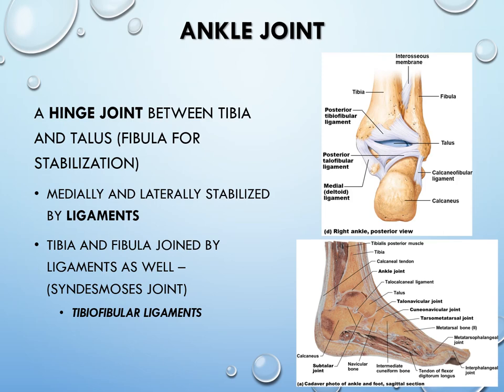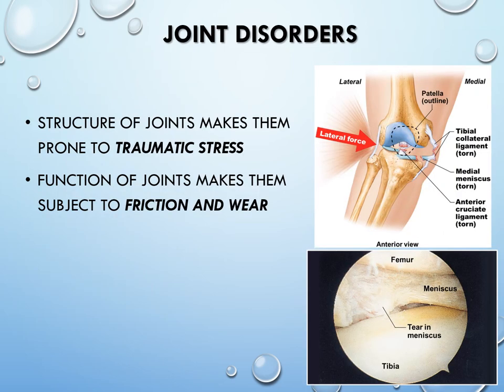The ankle is also a good hinge joint. The fibula provides lateral stabilization. Medial and lateral ligaments help stabilize side-to-side movements. The tibiofibular ligament — a syndesmosis joint — holds the tibia and fibula together, allowing very little movement between them.